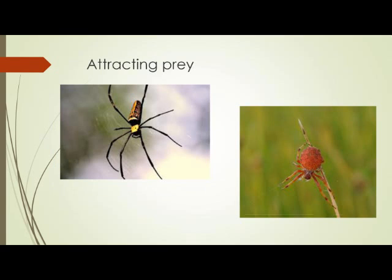Besides speed, bite, and web, some web-building spiders do not depend solely on their webs. Some will actually try to attract prey on their own by having bright body colors, which, similar to a stabilimentum, also reflects UV light.